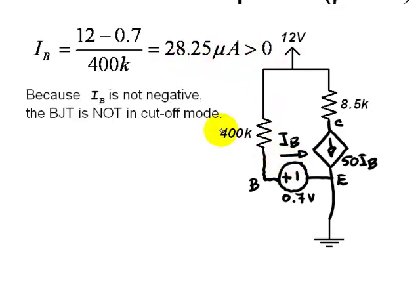Because that current is positive, the BJT is not in cut-off mode. We know that. The question is, is it in saturation or is it in linear mode?